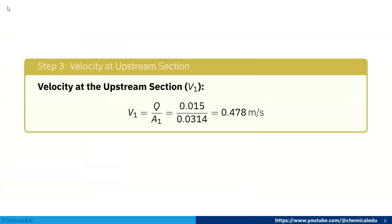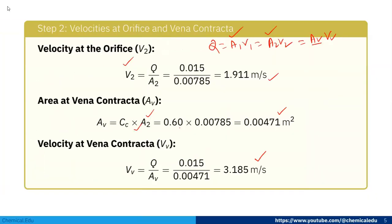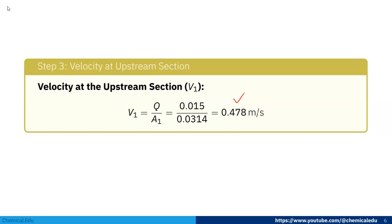Now velocity at the upstream section V₁ = Q/A₁ = 0.015/0.0314 = 0.478 m/s. The vena contracta velocity is obviously high at 3.185, while V₁ is 0.478 m/s.